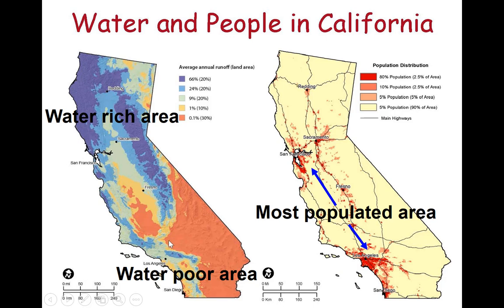In terms of water availability, the southern part of the state is pretty dry — it's an arid area that doesn't get a lot of rainfall. On the northern side, it gets significant rainfall and snowfall throughout the year. This means there's a lot of water on the northern side and not enough on the southern side, so it is extremely important to reallocate water from the water-rich northern area to the southern and central areas where the population lives.